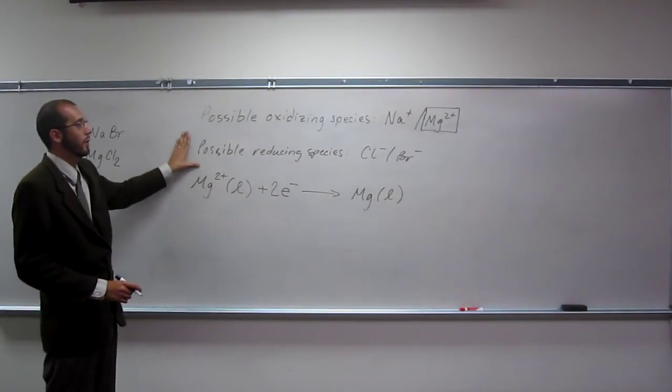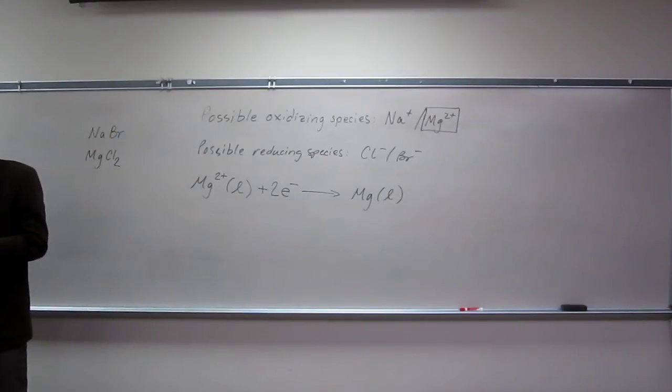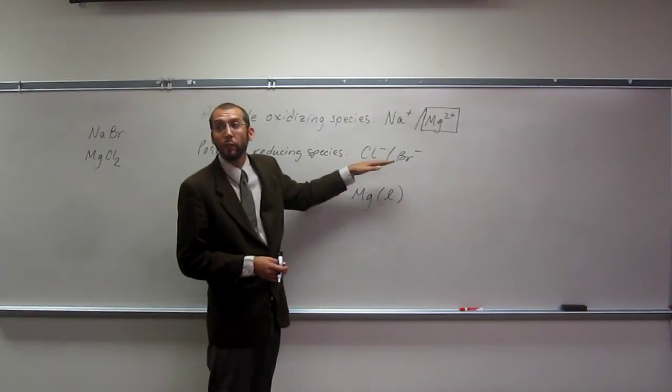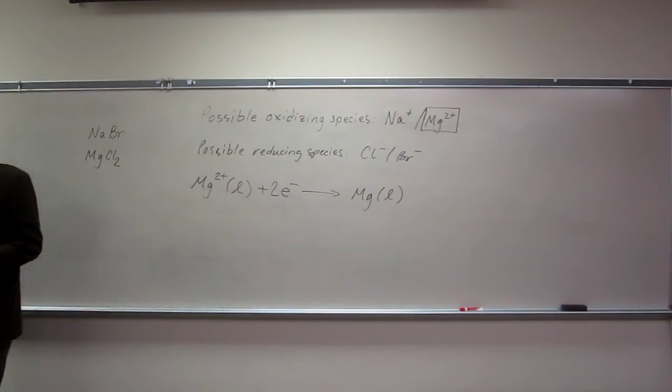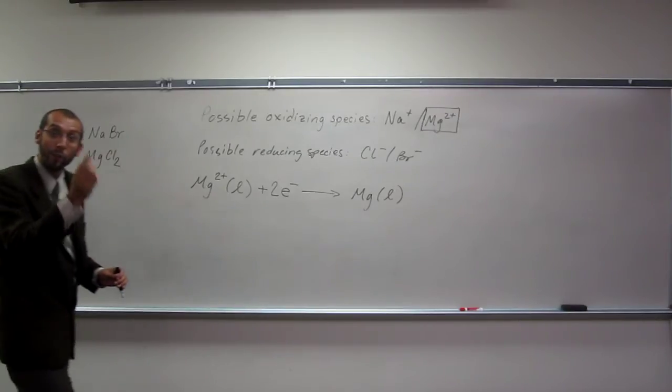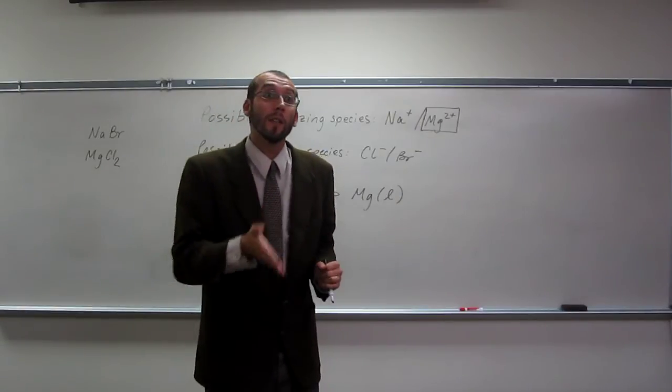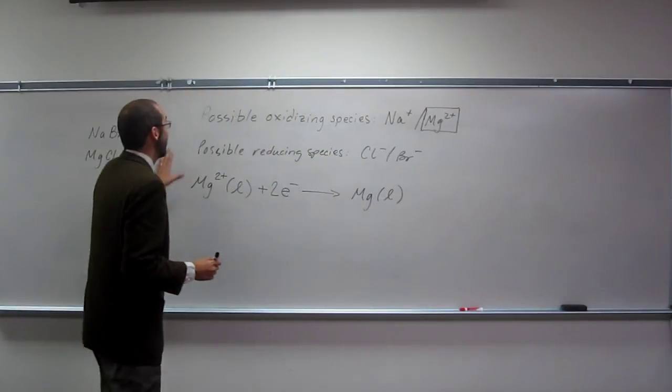Now let's look at the possible reducing species. We have to look at the electronegativities. Chlorine is more electronegative than bromine, so chlorine must be holding onto its electrons more tightly than bromine does. By that logic, bromine must be able to give up an electron easier than chlorine.